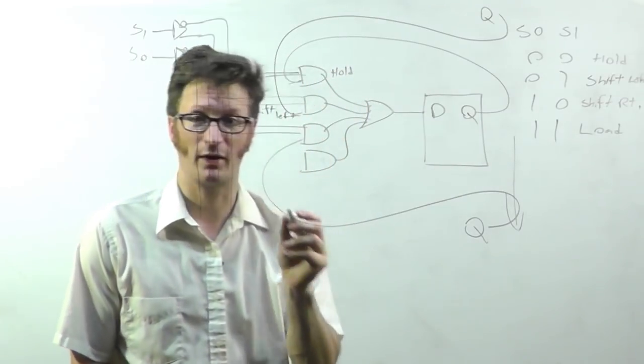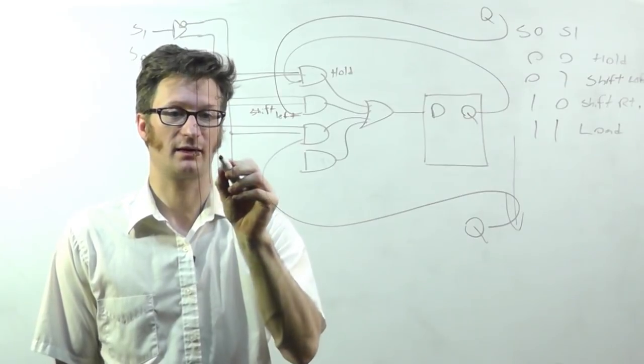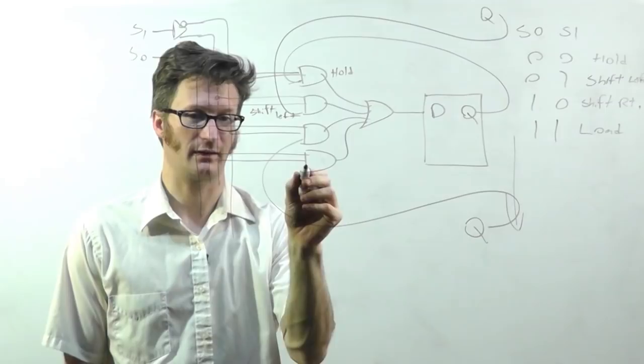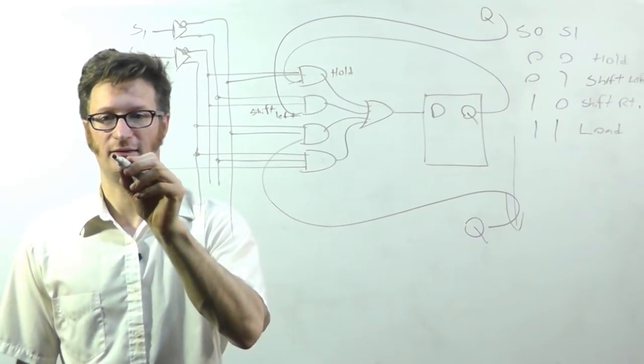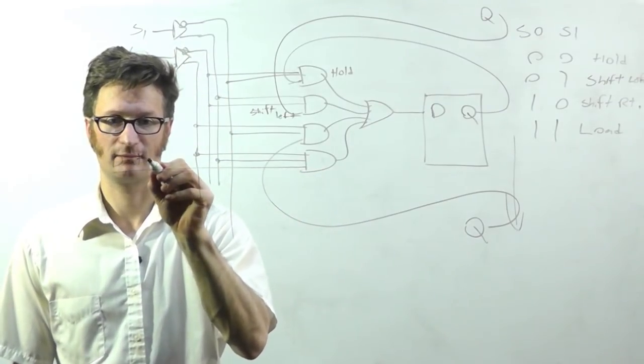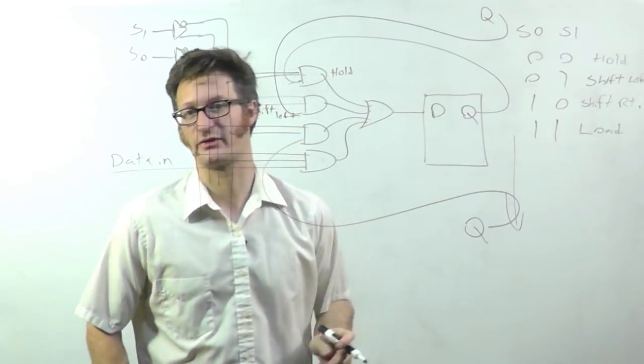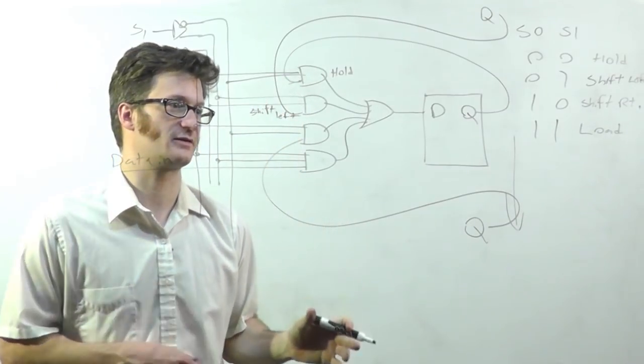And finally, with load, where they're both 1, I'm connecting here and here, bringing it like that. And this is my data in. So that is how a universal serial register or shift register works.